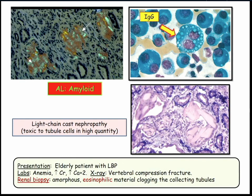The other is amyloid light chain — amyloid deposits in the kidney, in the glomeruli and interstitium. Amyloid renal disease presents with Congo red stain and apple green birefringence. The other is cast nephropathy — amorphous eosinophilic material clogging the tubules. With myeloma, you're secreting so many immunoglobulins that they become toxic to the tubules, or they travel downstream, pick up Tamm-Horsfall glycoprotein, and create obstructive casts in the collecting tubules.